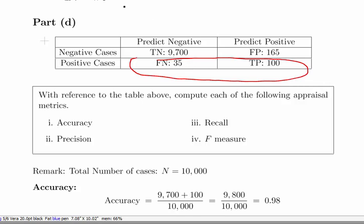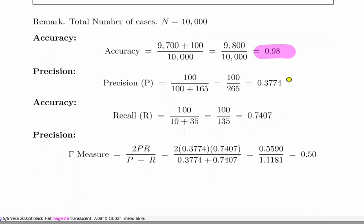I will do one more. This is just another something similar. In this case, we're catching most of the positive cases: 100 out of 135. But we're making a lot of misclassifications. We're predicting a lot of positives that actually should have been negative. Here in this case, again, the accuracy is actually 98%. In this case, we have our precision is 100 divided by 265, which is 37.74%. Our recall is 100 divided by 135, which is 74%.